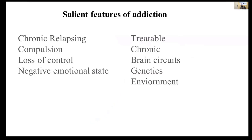The salient features of addiction: addiction is a chronically relapsing medical condition. It has three components — one is the compulsive behavior to take a particular drug or stimulus; there is a loss of control, not able to limit the intake of the substance; and there is a negative emotional state which follows once the stimulus or substance is not available. It is a treatable medical illness, it is chronic, and it involves brain circuits.